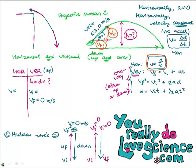Let's see what else I know. I don't know the height, I don't know the time, I don't know the horizontal distance. But I do know the acceleration on the vertical side: it's g, negative 9.80 meters per second squared. Now let's get our horizontal velocity and vertical initial velocity from the triangle using sine and cosine.